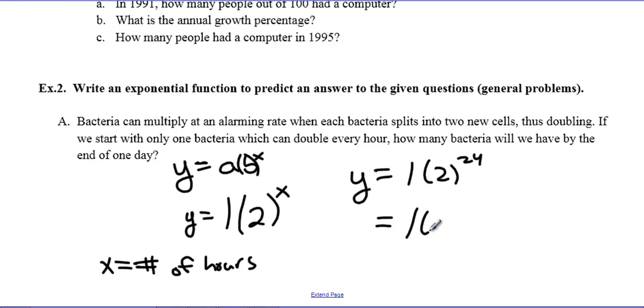When we're asked how many bacteria after 1 day, there's 24 hours in a day, so I'm going to calculate this to the 24th power. Using your calculator, you're going to end up with 16,777,216 bacteria just at the end of 1 day. That's what makes stuff like salmonella so dangerous to human beings because it multiplies so fast.